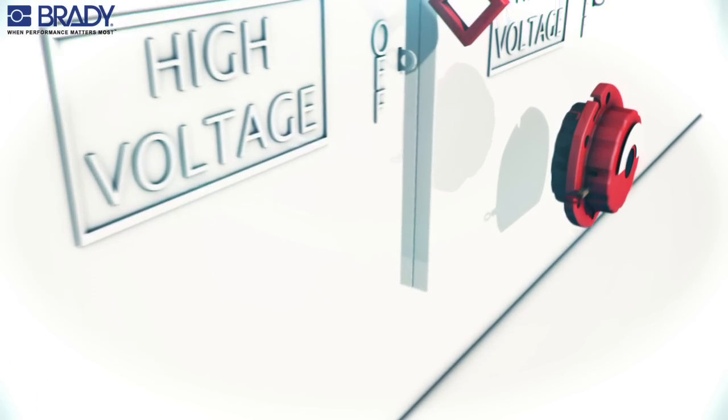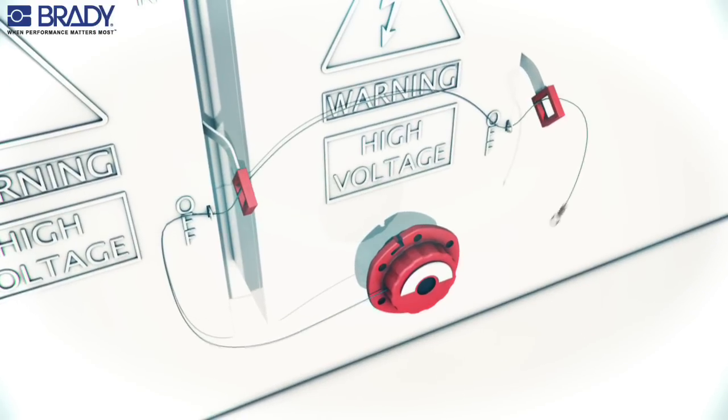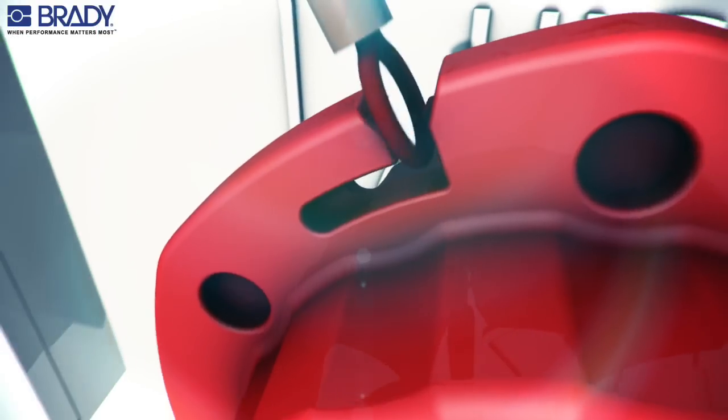Pull out the desired length of cable and run the cable through all the associated devices to be locked out. Place the looped end into the slot of the mini cable lockout device.